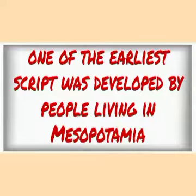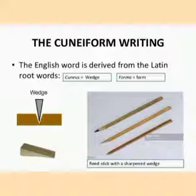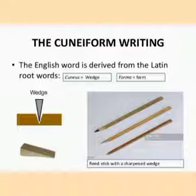One of the earliest scripts was developed by people living in Mesopotamia. It was known as Cuneiform Script. The English word Cuneiform is derived from two Latin words: Cuneus and Forma. Cuneus means wedge or sharp, and Forma means form or type.